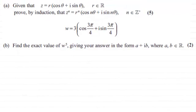Hi there. Now in the first part of this question we were given that z equals r times cos theta plus i sine theta, where r was any real number, and asked to prove by induction that z to the power n equals r to the power n times cos n theta plus i sine n theta, where n was any positive integer.